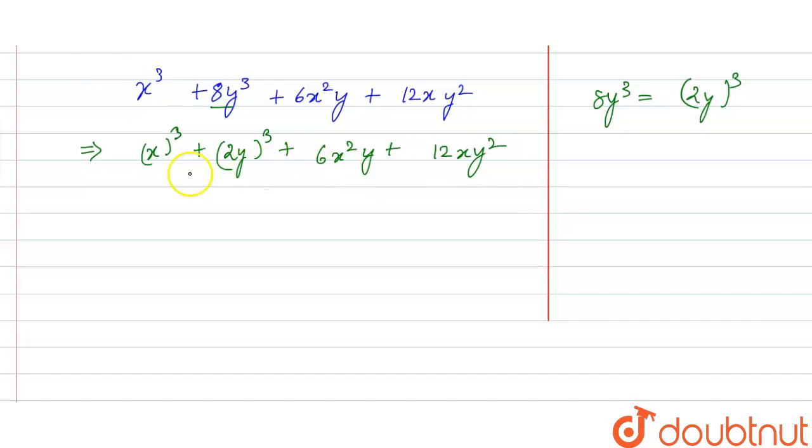So we have terms present of cubes and 6x square y and 12xy square. So accordingly we have an identity of a plus b whole cube, we have a cube plus b cube plus 3a square b plus 3ab square.